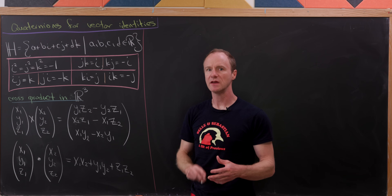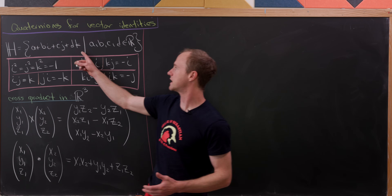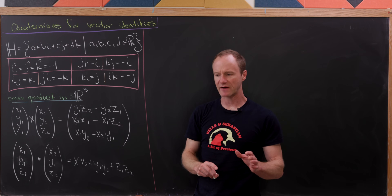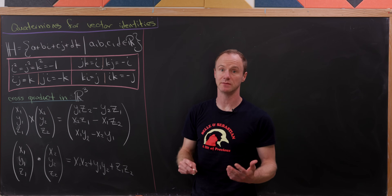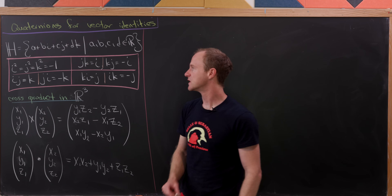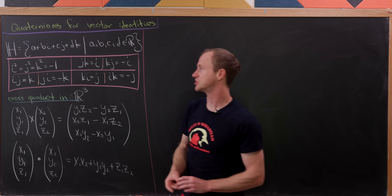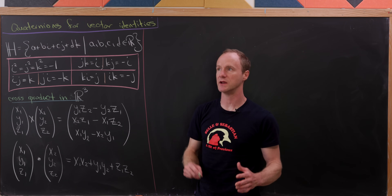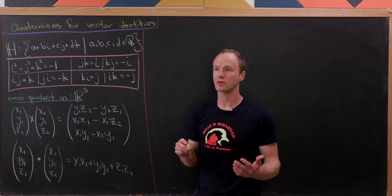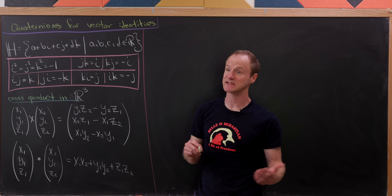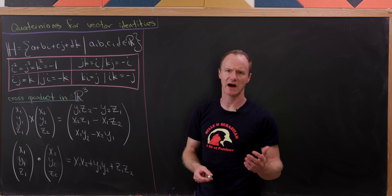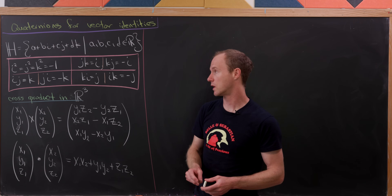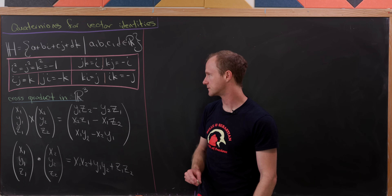When you do multiplication between two elements of this set, you have to keep a couple things in mind. First of all, i squared, j squared, and k squared are all negative one. So you've got three — or actually six, if you think about positives and negatives — square roots of negative one.